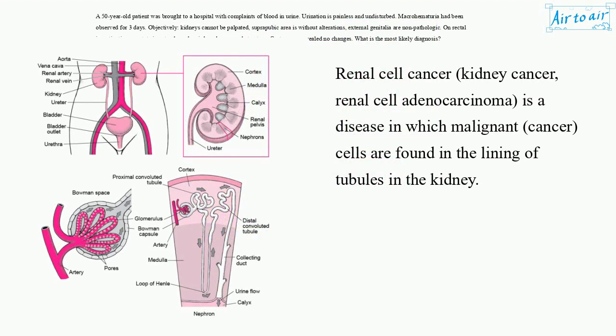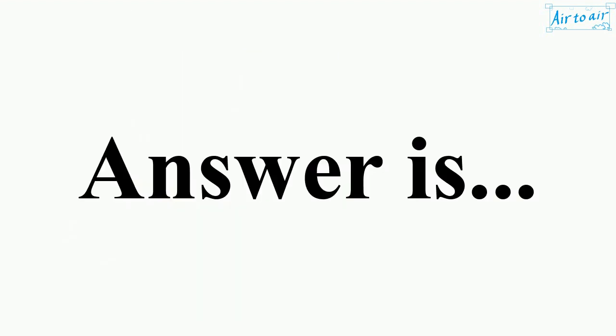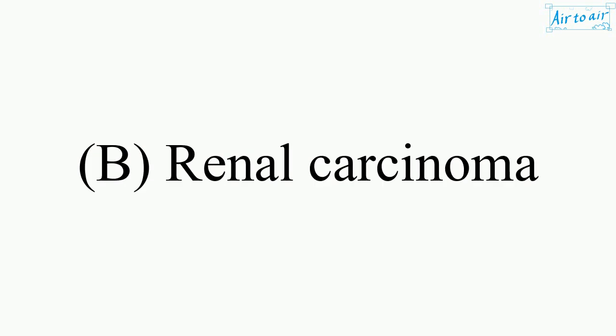Renal cell cancer, also known as kidney cancer or renal cell adenocarcinoma, is a disease in which malignant cancer cells are found in the lining of tubules in the kidney. The answer is B. Renal carcinoma.